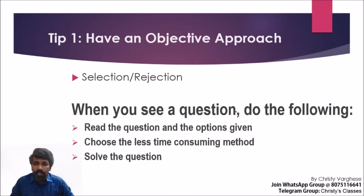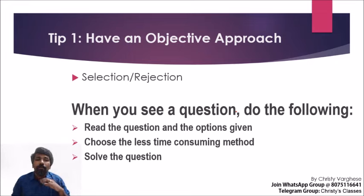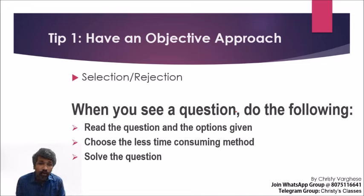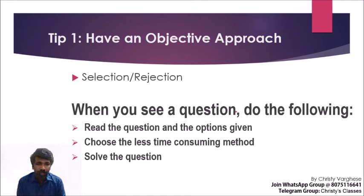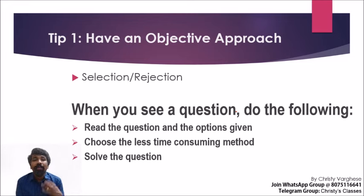In the aptitude section — Part A of the CSIR NET exam — you should have an objective approach. That is the first tip. In your MSc or BSc exams you followed a descriptive paper: read a question, understand it, find the answer. But in a competitive exam, you must have an objective approach — how well you use the answer options is very important.